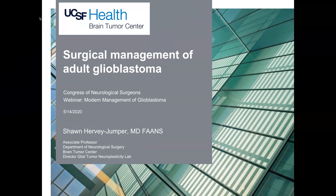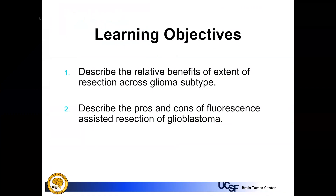We're tasked with talking about, in the modern day, surgical management of adult glioblastoma, particularly focused on two learning objectives. We want to describe the relative benefits of extended resection across glioma subtype, describe the pros and cons of fluorescence-guided resection of glioblastoma, and unpack how we as neurosurgeons make decisions about who gets surgery, when, and what intraoperative tools we can use to help us do our jobs better.